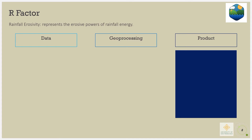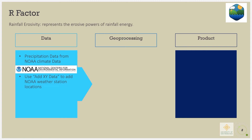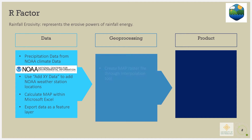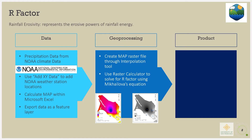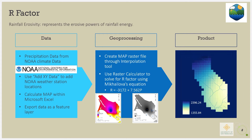The R factor represents the erosive power of rainfall energy. Weather stations were selected from the NOAA Climate Data website, and their precipitation data was downloaded. The mean annual precipitation value, or MAP value, was calculated from the NOAA data and then imported as a feature layer to ArcMap. The MAP raster file was created using the interpolation IDW tool, and finally, the raster calculator was used to calculate the R factor with Mikhailova's equation.